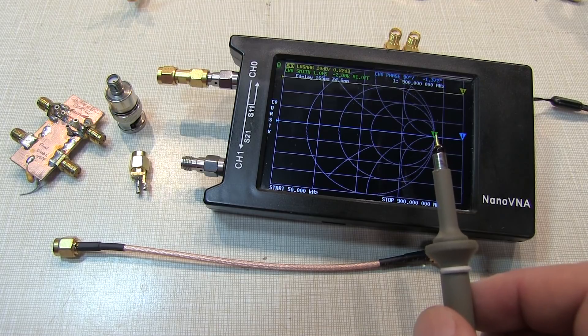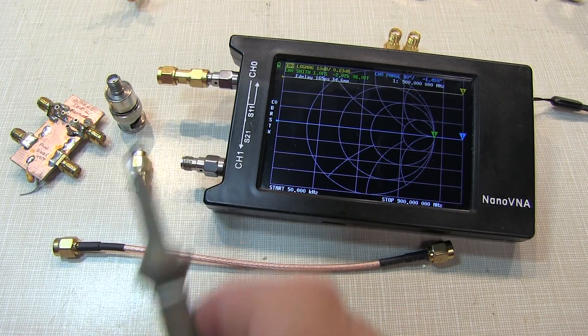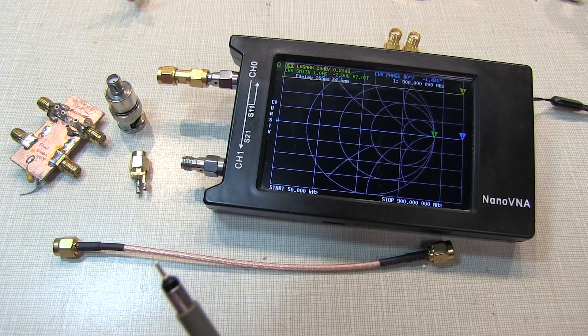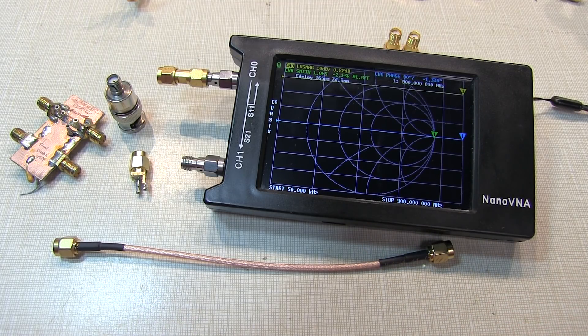So by changing that electrical delay parameter, we can effectively affect a port extension on the Nano VNA. So I hope you learned something about what a port extension is, why you might use them, and how you effectively apply it on a device like this.